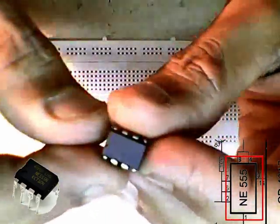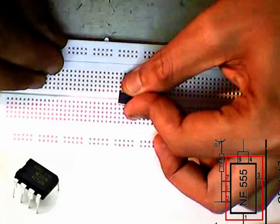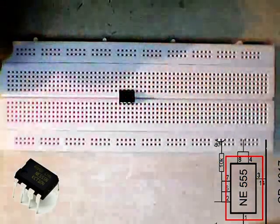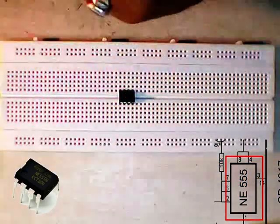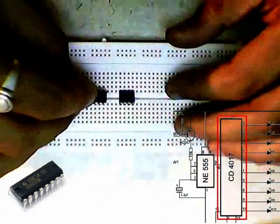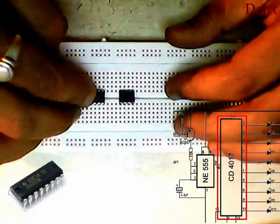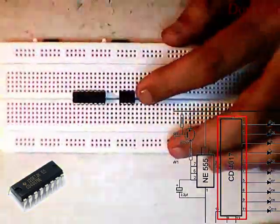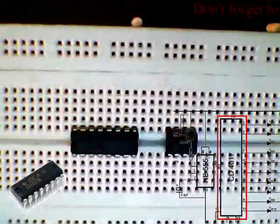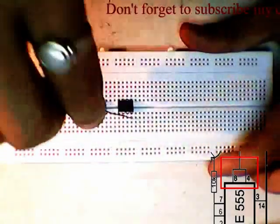Connecting 555 timer IC. Connecting CD4017 IC. Connecting pin 4 and pin 8 of the timer IC.